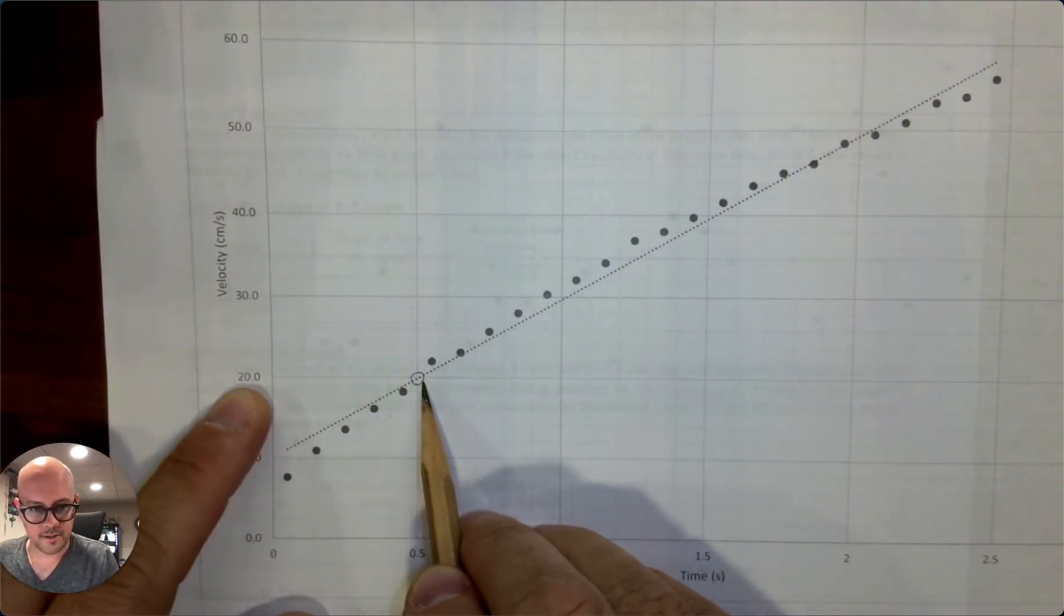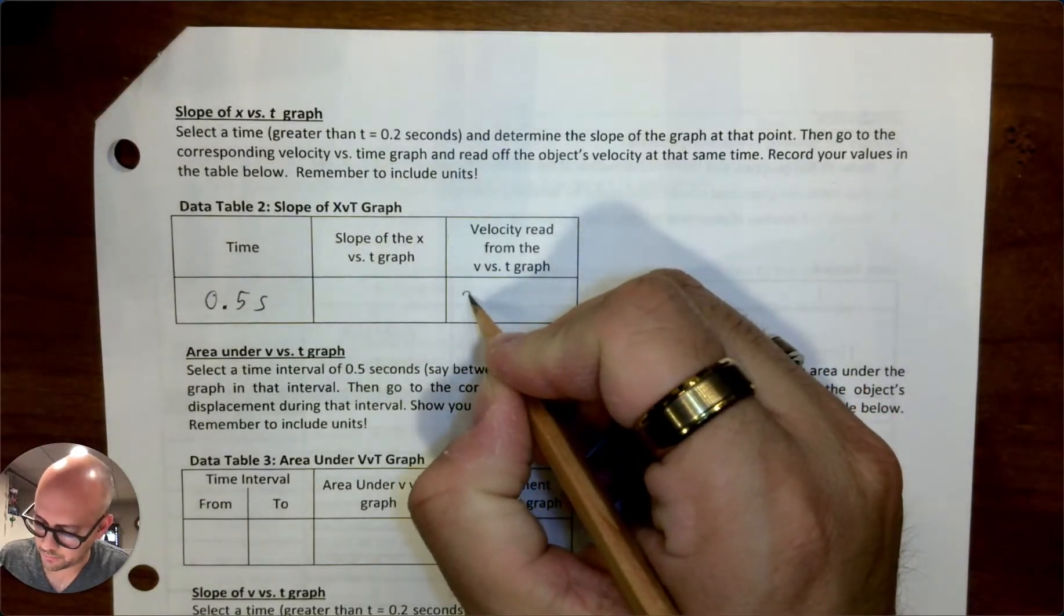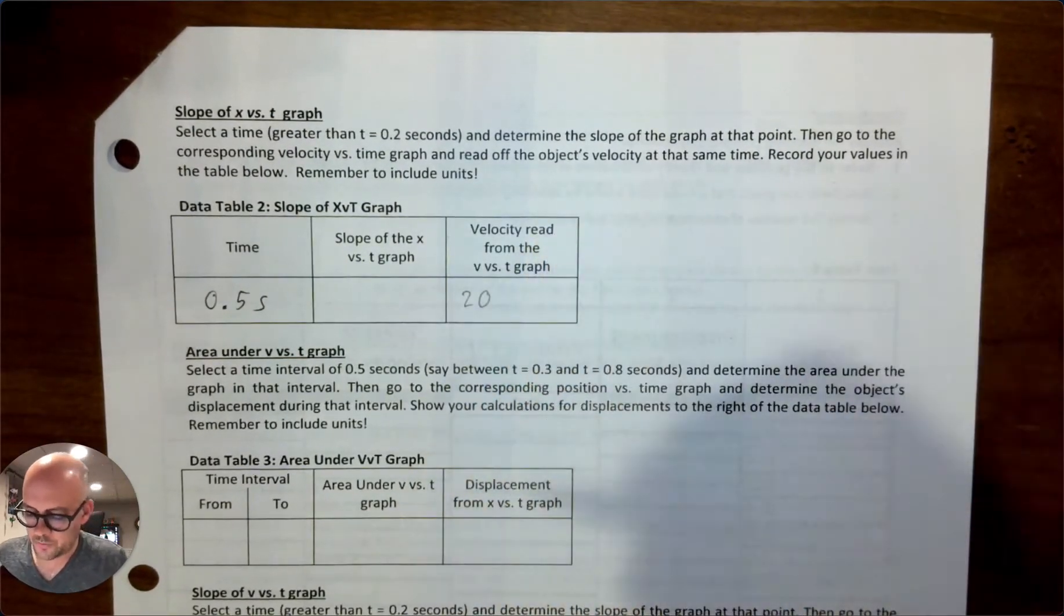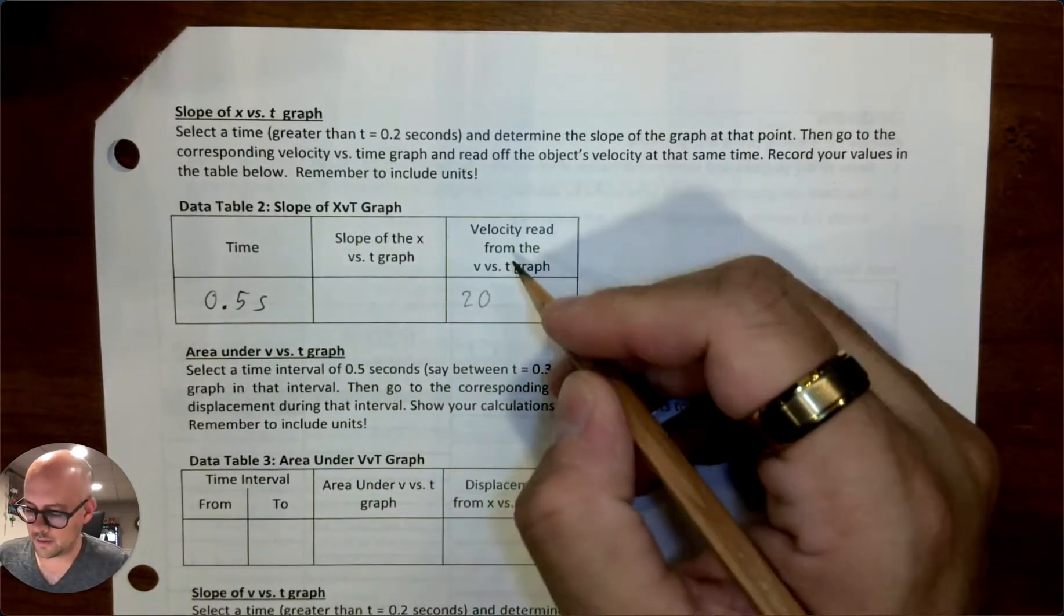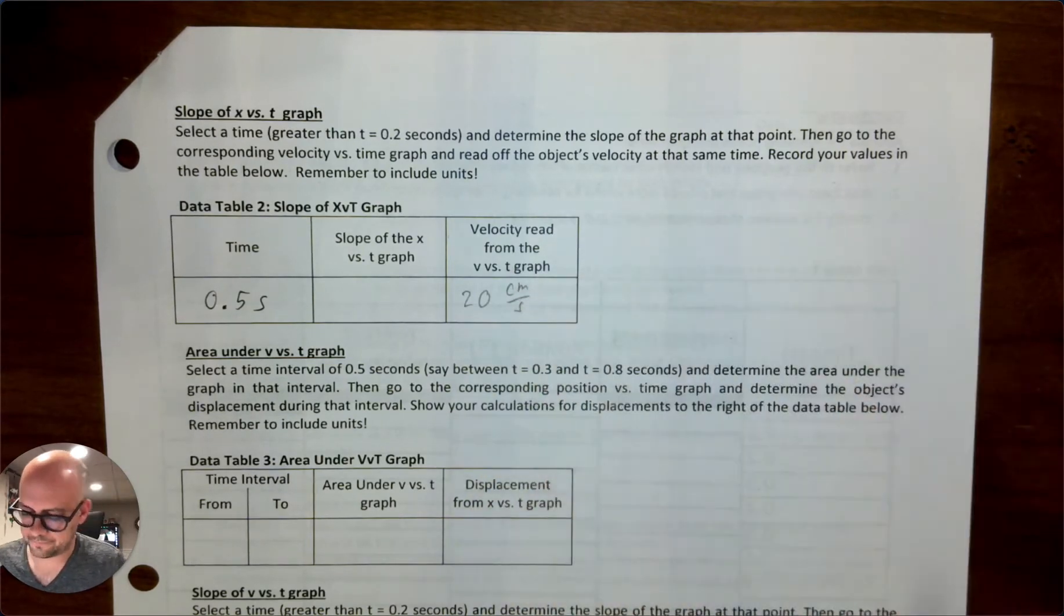So when you go to 0.5 seconds, first of all, if you've done your graph correctly, you will notice that there is no point at 0.5 seconds. Second, you are going to select the point on the trend line. And so that trend line is 0.5 seconds. It shows a velocity of 20. So that's just recording it. So 20.